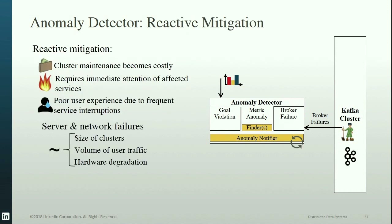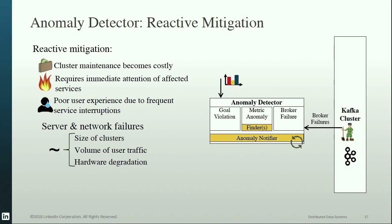Broker failure remediation is a reactive mitigation approach. Reactive mitigation has challenges: fixing an issue after the fact is expensive, Kafka is an infrastructure service used by almost all other services, so any Kafka issue impacts dependent services and requires immediate attention, and frequent service interruptions lead to poor user experience. Experience with distributed systems shows a correlation between server and network component failure frequency and increasing cluster size, growing user traffic, and hardware degradation. Solely relying on reactive mitigation at increasing scale is not a great option.